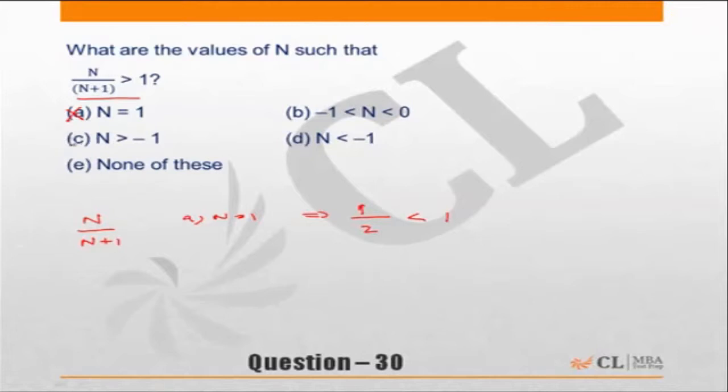Also, choice C is incorrect because n = 1 is part of choice C, which states n > -1. That means n = 1 will figure in this solution set, but n = 1 does not satisfy the condition. So by checking n = 1, we eliminated choices A and C.